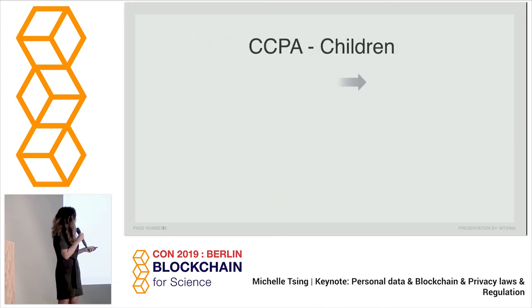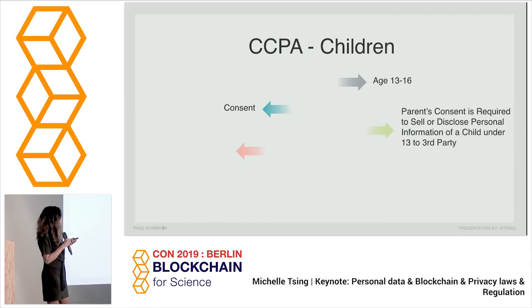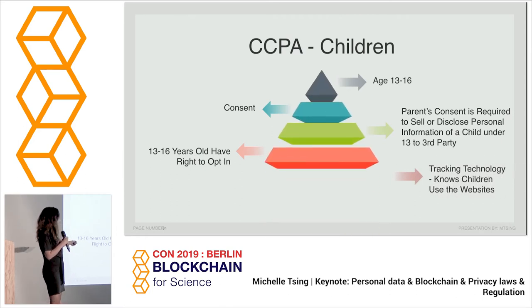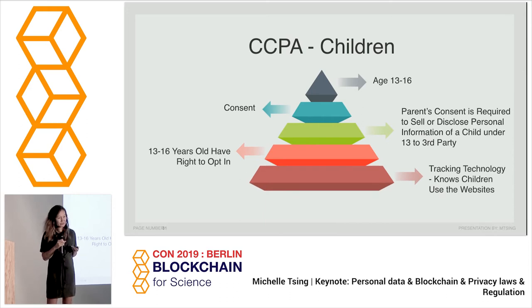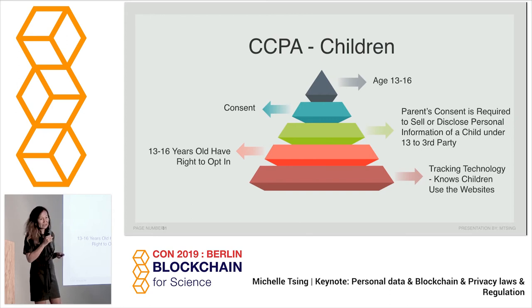With CCPA, in California we have a lot of protections for children. If you're 13 or 16 years old, your parent's consent is required and you have the right to opt in. So if you have users between those ages — even if you don't intend to target them — but you know they're using the site, one of the best practices is to have a different landing page for them, because they need to opt in. That is very different from other laws and regulations.